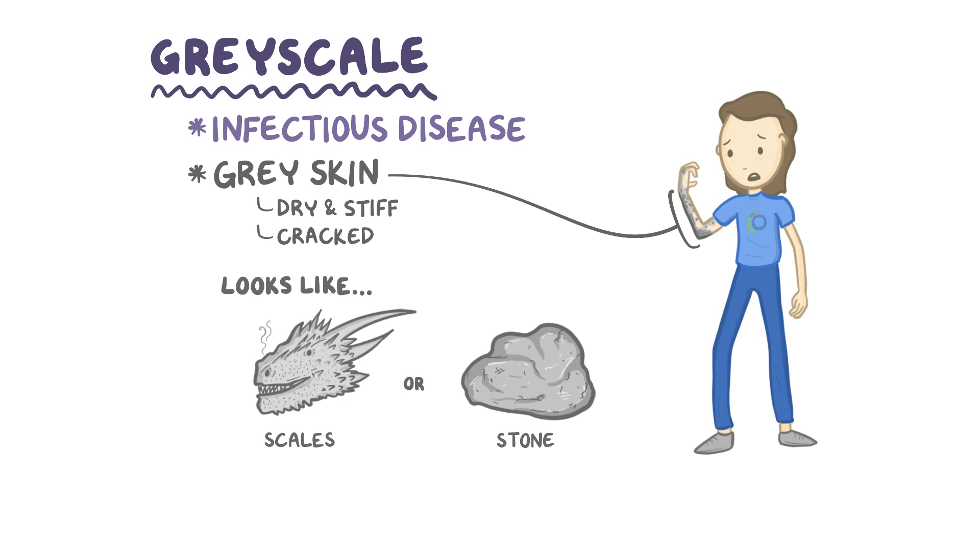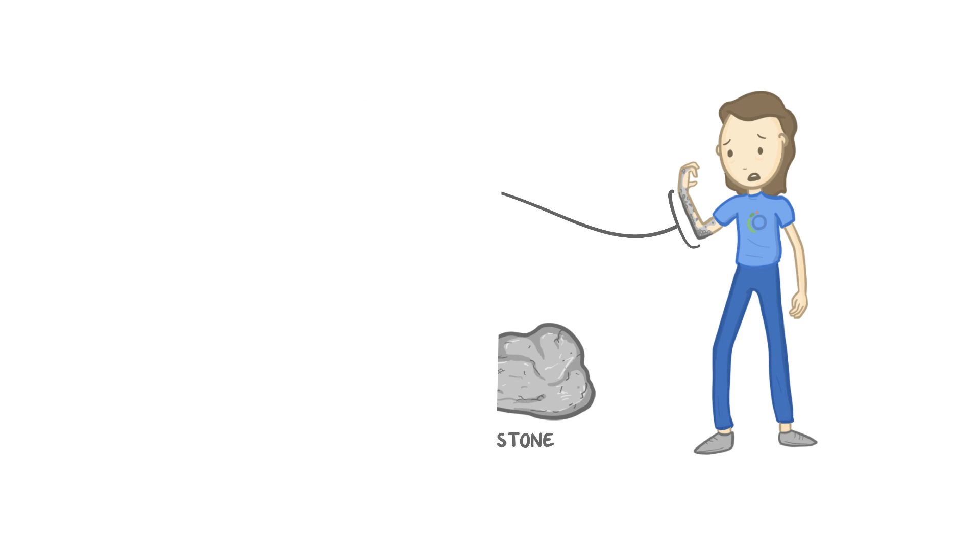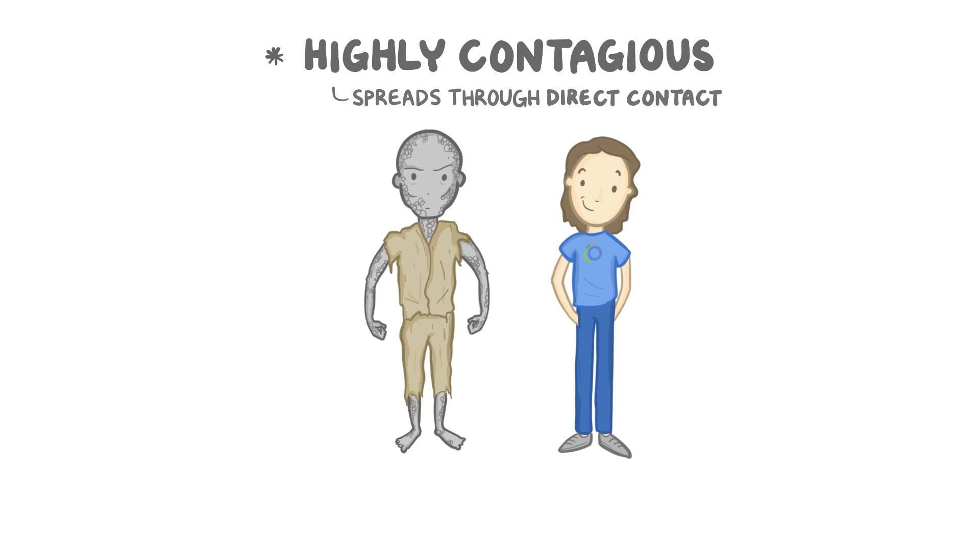Little is actually known regarding both the organism responsible and the pathophysiology of grayscale, but it is known that the infection is highly contagious and often spreads through direct contact with another infected individual.